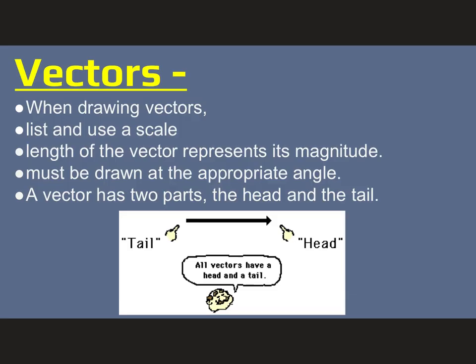Now some rules to keep in mind when drawing vectors. When we draw vectors, we want to make sure that we're using a scale. So the length of the vector represents its magnitude. That just means that a vector that's worth more should be longer than a vector that's worth less. So say, for example, the vector represents velocity. A 20 meter per second velocity vector should be twice as long as a 10 meter per second velocity vector.